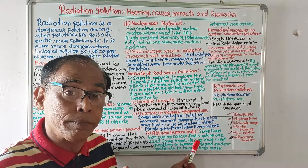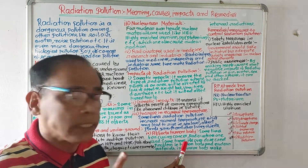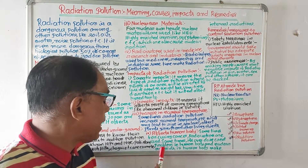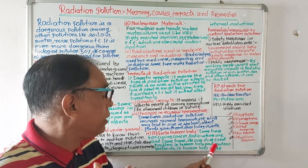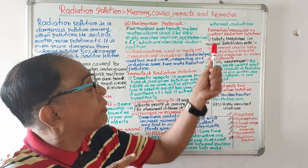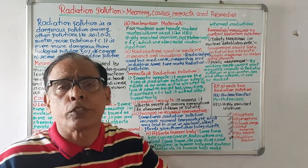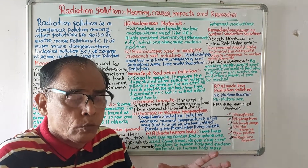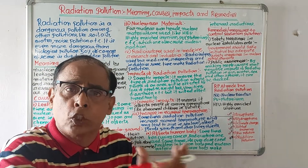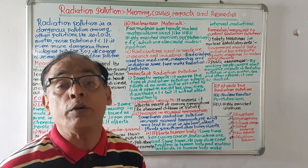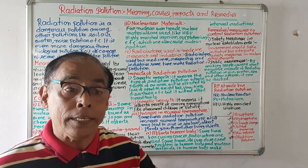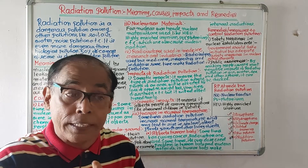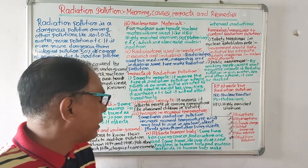The fourth impact is effect on the human body. Sometimes for curing cancer, radioisotopes are used, and sometimes their overdose creates problems in the human body. Nuclear materials in the human body make internal radiations. Whenever people suffer from cancer, if there will be overdose of radioisotopes, it will affect the human body, and if nuclear materials enter the human body, it will make internal radiation.